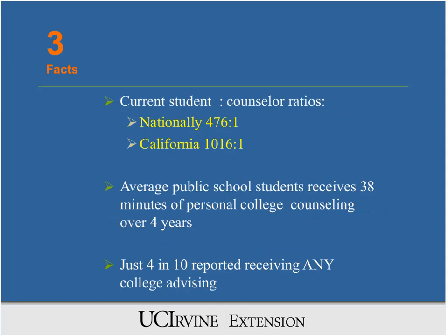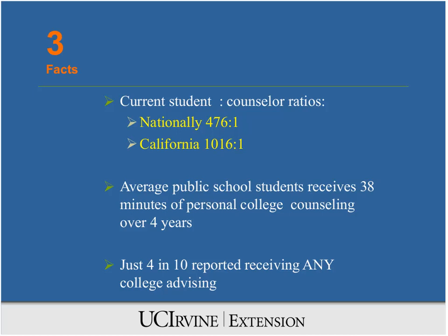If it weren't for independent educational consulting, I think the kids we'd be leaving behind are public school kids. Recommended student-counselor ratios are about 250 to 1 — they are now close to double that nationally, and more than four times that in California. In four years, the average student gets 38 minutes of college counseling, or about 10 minutes a year. And 60% of kids say they haven't received any college counseling at all. That's why I think the field of educational consulting is growing and holds great hope.